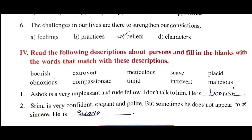Look at the last exercise in the vocabulary part of Unit 1. Read the following descriptions about persons and fill in the blanks with the words that match these descriptions. These ten words will match the blanks for the ten sentences. First example: 'Ashok is a very unpleasant and rude fellow, I don't talk to him.' Unpleasant and rude - the matching word is 'boorish.' Boorish means unpleasant and rude.